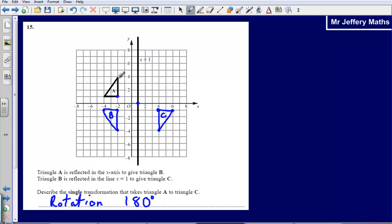So the point at which triangle A has been rotated around 180 degrees is simply the point 1, 0. So it's rotation 180 degrees around the point 1, 0.